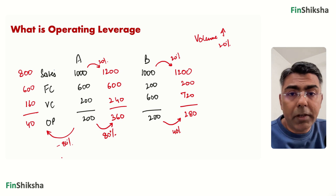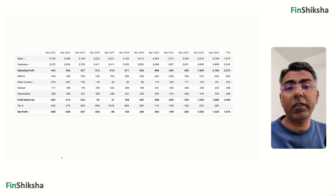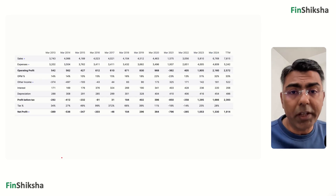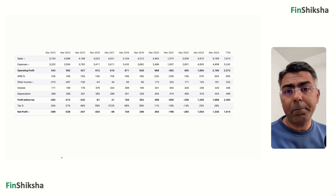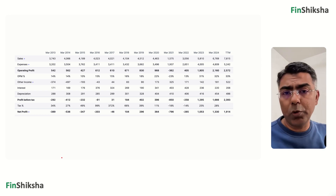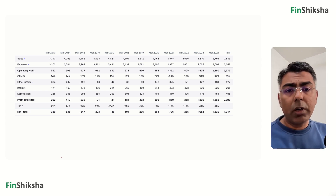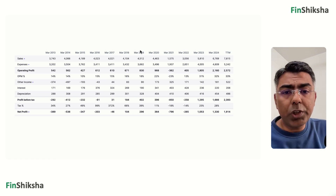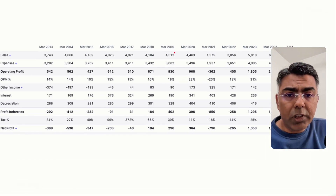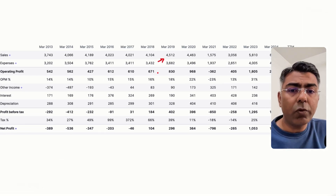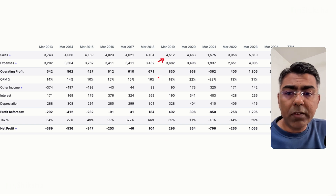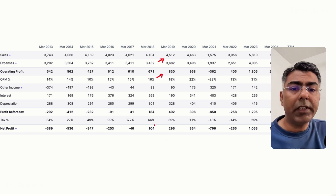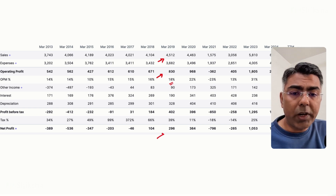Let's take a practical example — Indian Hotels, the largest hotel chain in India, which manages Taj Hotels, a Tata Group company. Pay specific attention to two years. In 2019, sales were 4,500 crore, operating profit (EBITDA) was about 830 crore, margin was 18%, and net profit was 296 crore.